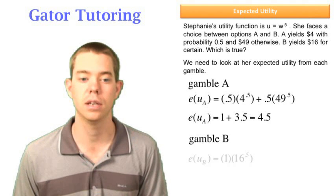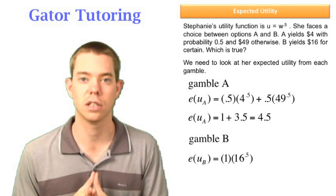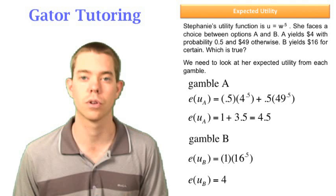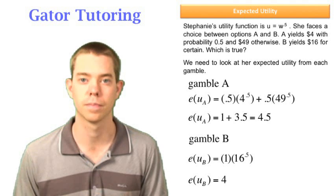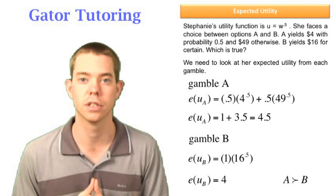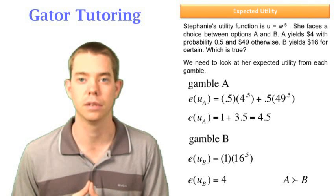Her expected utility from gamble B, we know that she's going to get $16 with 100% certainty, so 1 times 16 raised to the 0.5, and we see that that's worth $4 of expected utility. So she prefers A to B, and this is how we represent preferences. A is preferred to B is what this is saying.